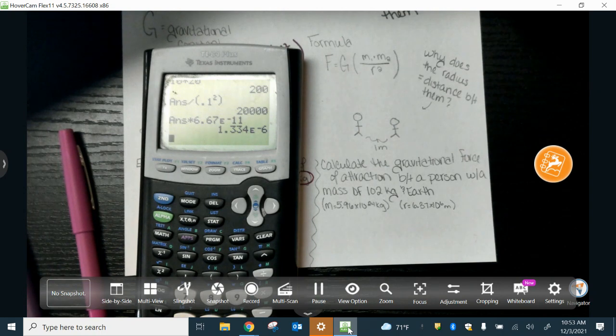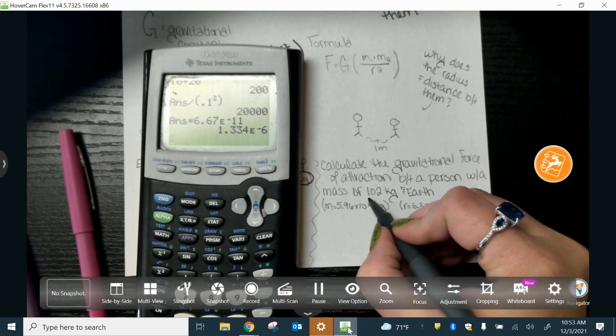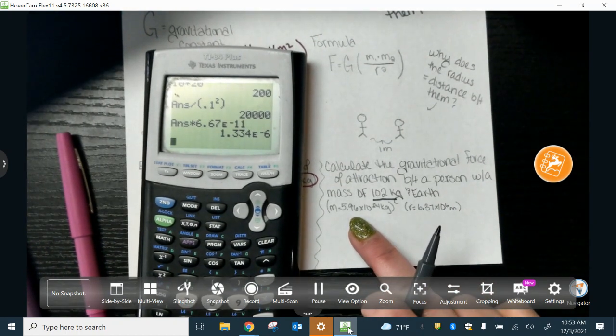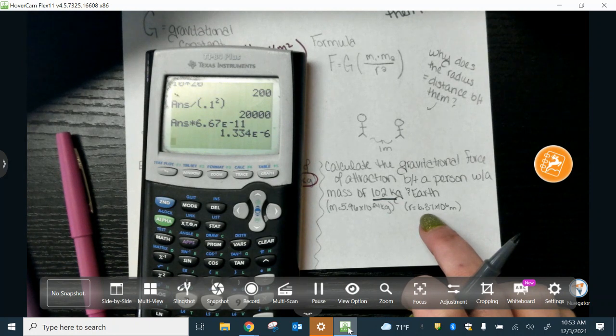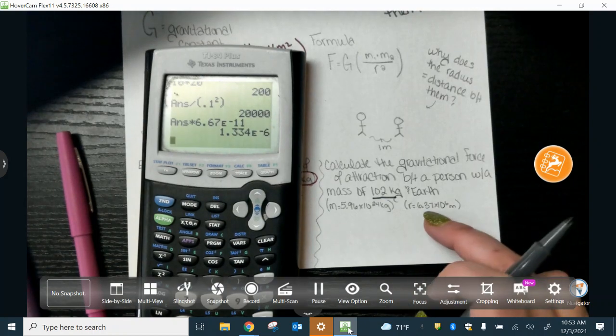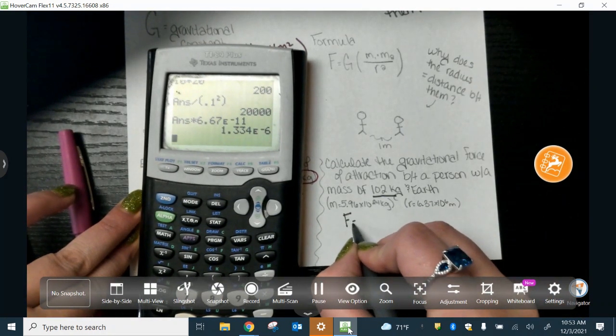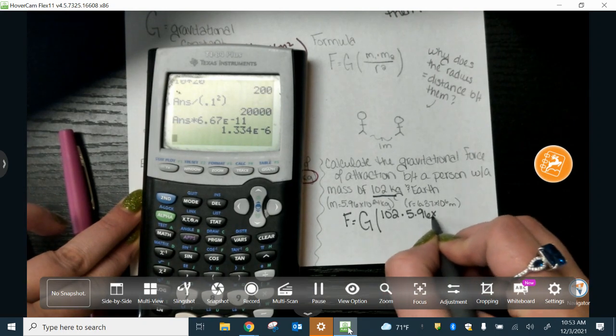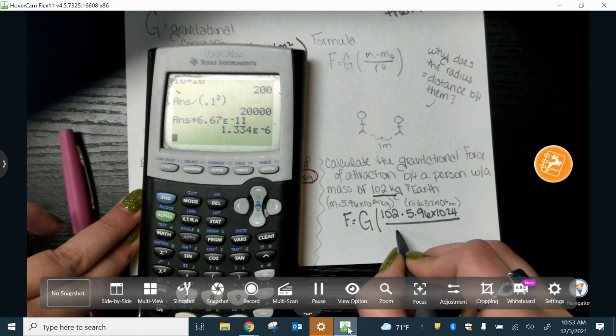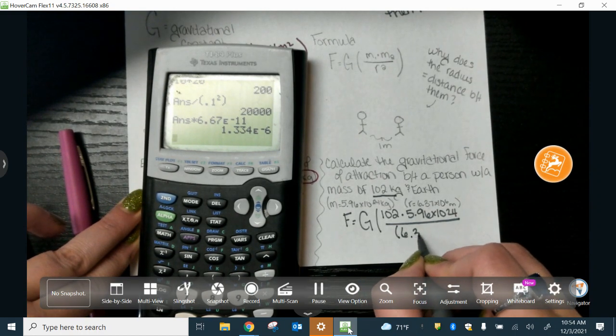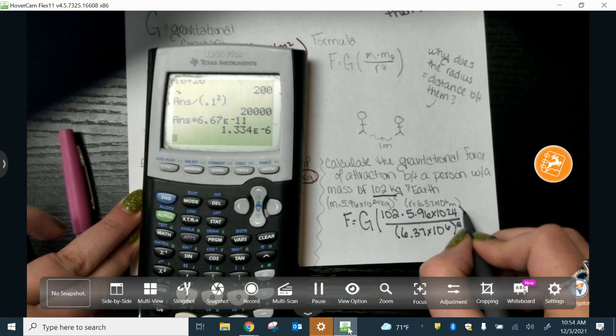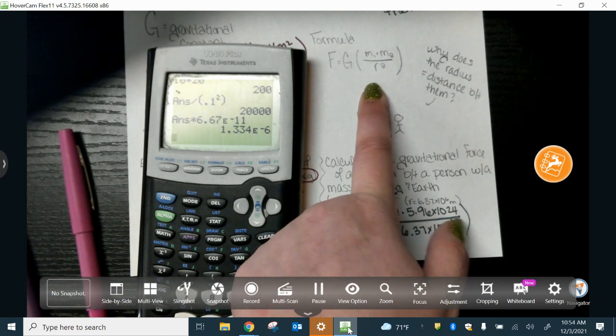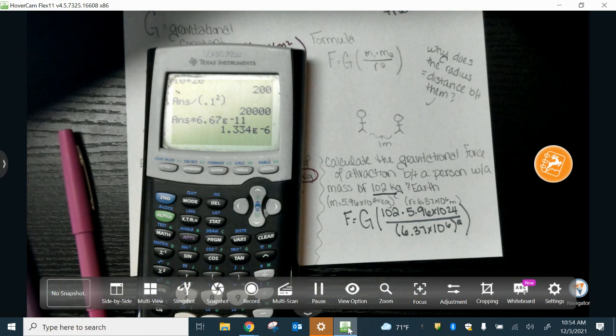All right, but let's look at the second one. It says calculate the gravitational force of attraction between a person with a mass of 102 kilograms and Earth. Earth has a mass of 5.96 times 10 to the 24th kilograms and a radius of 6.37 times 10 to the 6th meters. So we've got to do it the same way.